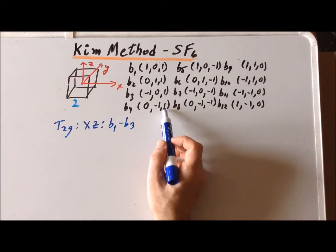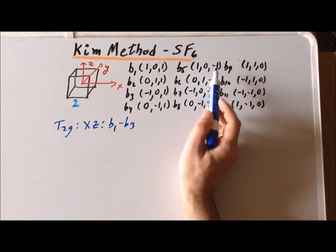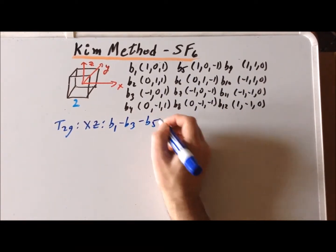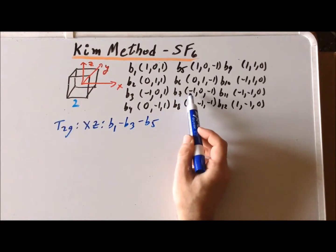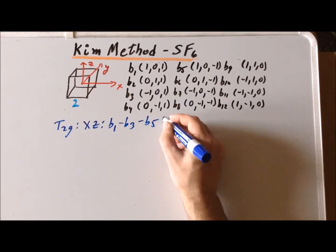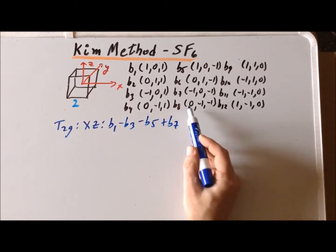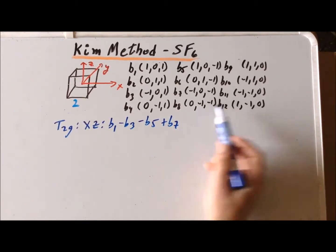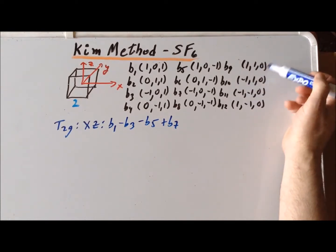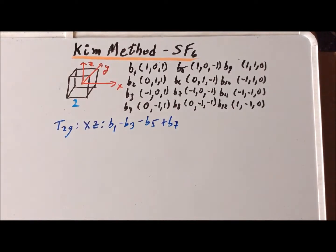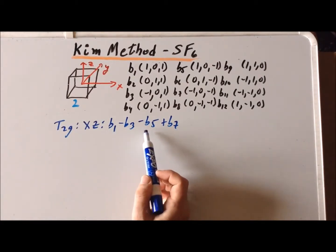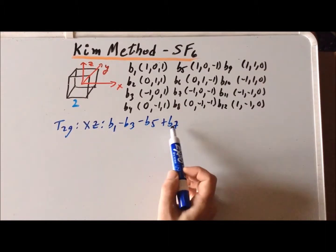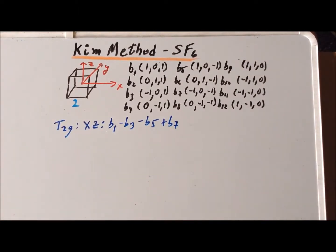For B4, 0 times 1 is 0. For B5, 1 times −1 gives a coefficient of −1, so we have minus B5. For B6, 0 times −1 is 0. For B7, −1 times −1 is +1, so we have plus B7. For B8, 0 times −1 is 0. For points B9 through B12, since the z coordinate is 0, the basis function is identically 0. So the overall bending motion is B1 − B3 − B5 + B7: angles B1 and B7 get bigger while B3 and B5 get smaller.